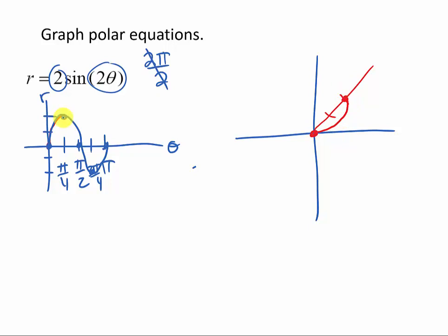Then in looking at my graph after pi fourths, I decrease till I get to 0 when I get to pi halves. So when I get here to pi halves, I need to be back at 0.